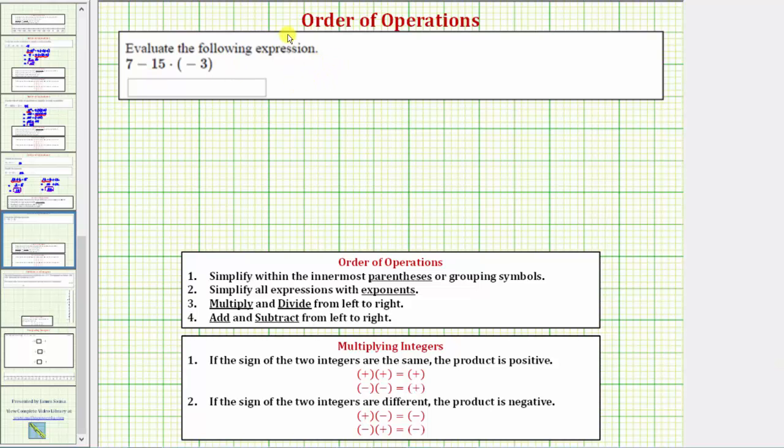When we evaluate the following expression, the directions may also say simplify the expression. We're given 7 minus 15 times negative 3.